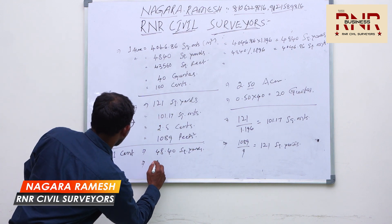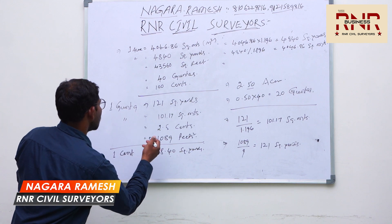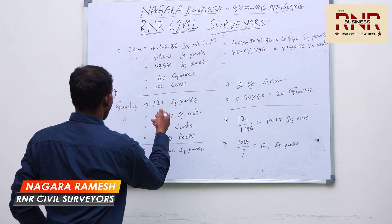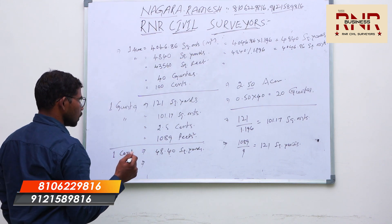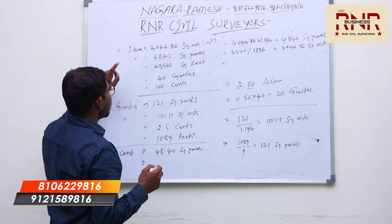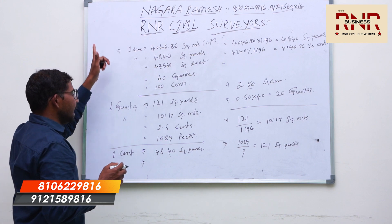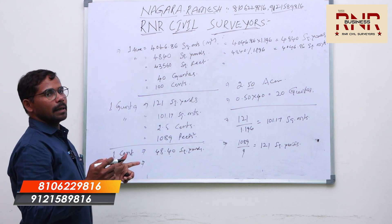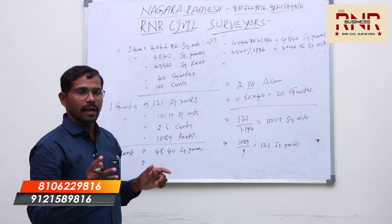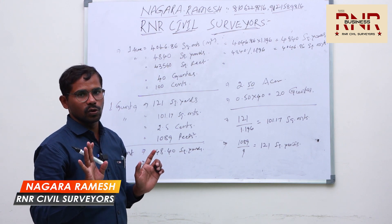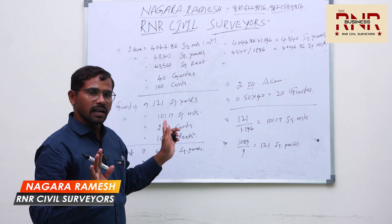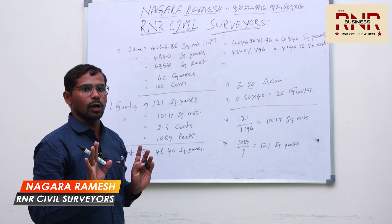2.5 cents automatically equals one gunta as well. There is an area calculation involved here.